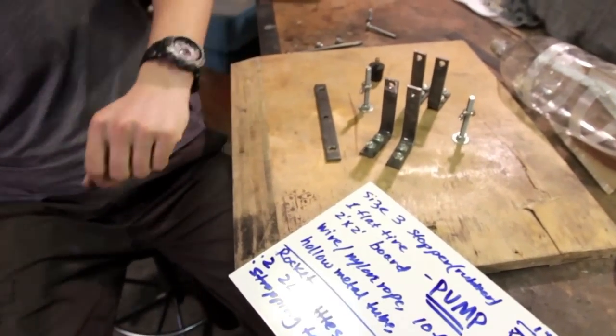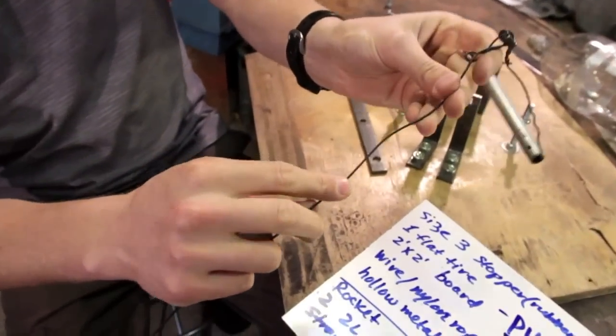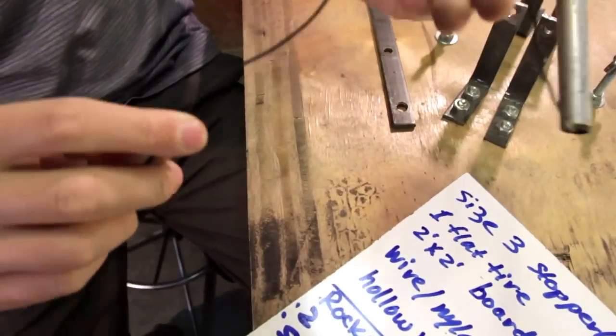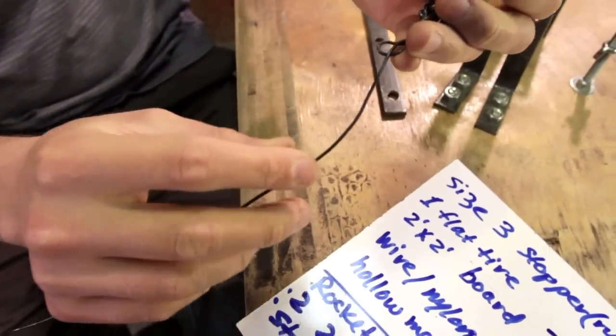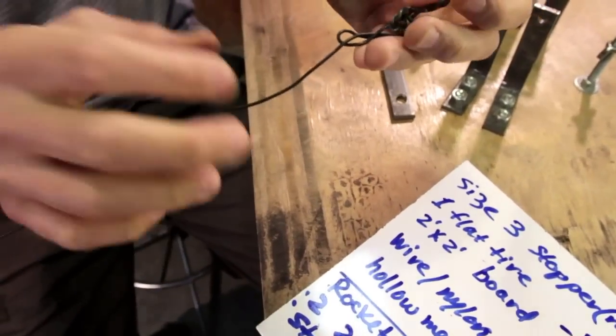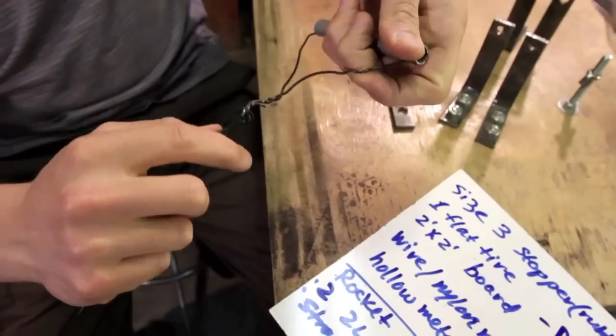The other thing you're going to need is about 10 feet of wire. Bailing wire or whatever you want to call it. Just kind of good rigid wire or a nylon rope or some kind of strong rope that you can use for the handle.